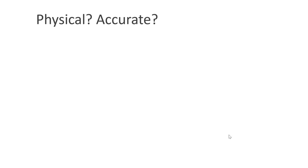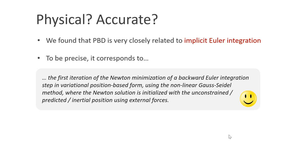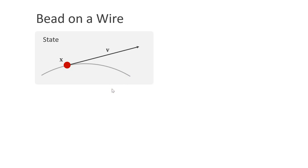What people often ask is whether PBD is physical and accurate. PBD has had the reputation of being unphysical and inaccurate. However, we found that it is closely related to implicit Euler integration, a very popular method because it is unconditionally stable. To be precise, position-based dynamics corresponds to the first iteration of the Newton minimization of a backward Euler integration step in variational position-based form using the non-linear Gauss-Seidel method, where the Newton solution is initialized with the unconstrained predicted inertial position using external forces. The original position-based dynamics approach is only unphysical in the way it handles softness. Fortunately, we could fix this problem with XPBD, extended position-based dynamics.